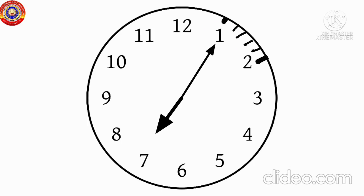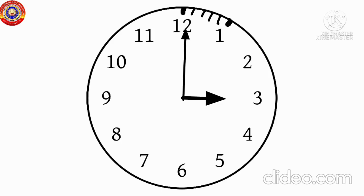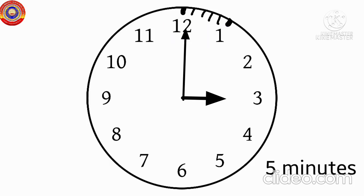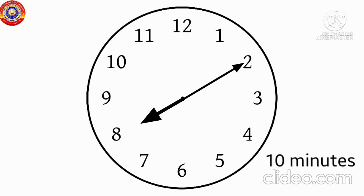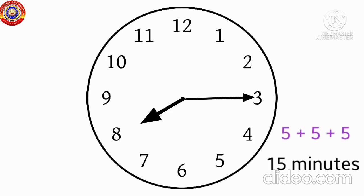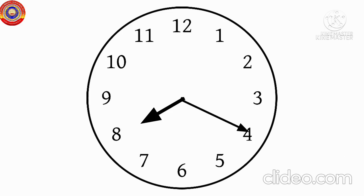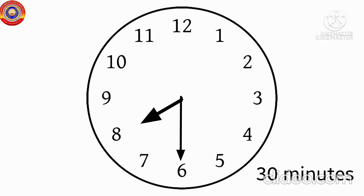When the minute hand moves from one number to the next, the time that passes is 5 minutes. The minute hand starts from 12 to 1 — that is 5 minutes. From 12 to 2 — 10 minutes. From 12 to 3 — 15 minutes. From 12 to 4 — 20 minutes. From 12 to 5 — 25 minutes. From 12 to 6 — 30 minutes.